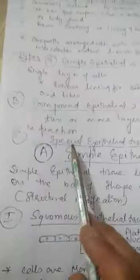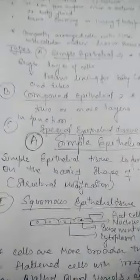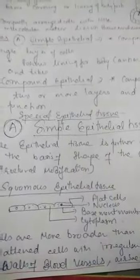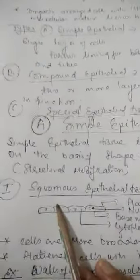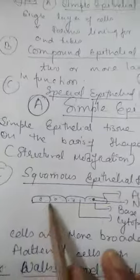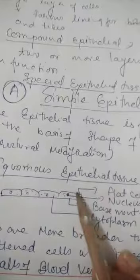There is also special epithelial tissue as category C. Simple epithelial tissue is made up of a single layer of cells and is further divided on the basis of the shape of the cells, which is a structural modification. The first type is squamous epithelial tissue, where the cells are flat — more broader than longer. All cells lie on the basement membrane, with nucleus and cytoplasm present.